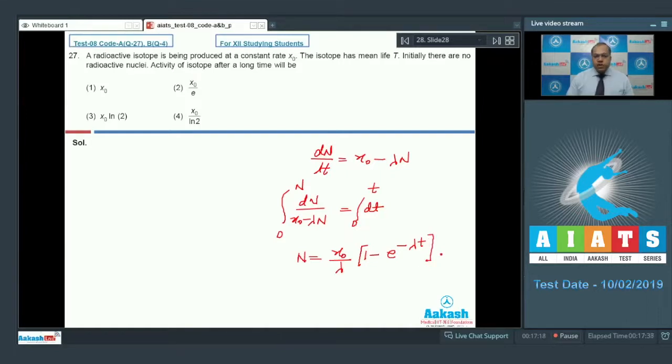Now in the question it is asked, the activity of isotope after a long time. So when T approaches infinity, the value of n comes out to be X0 by lambda. So activity is n into lambda and which is equal to X0. So option 1 is the correct answer. Let's move to question number 28.